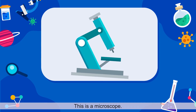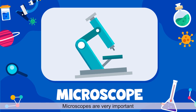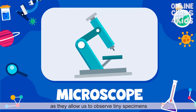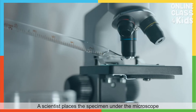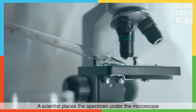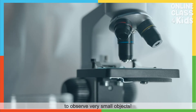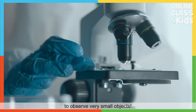This is a microscope. Microscopes are very important, as they allow us to observe tiny specimens that are not seen by the naked eye. A scientist places the specimen under the microscope to observe very small objects.